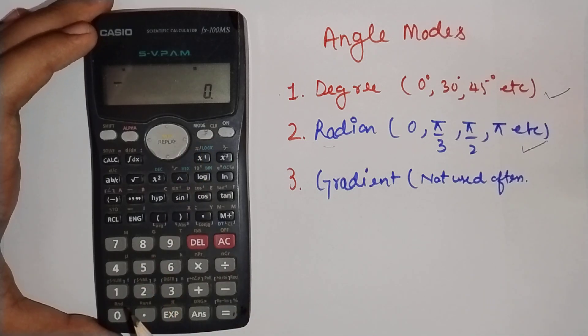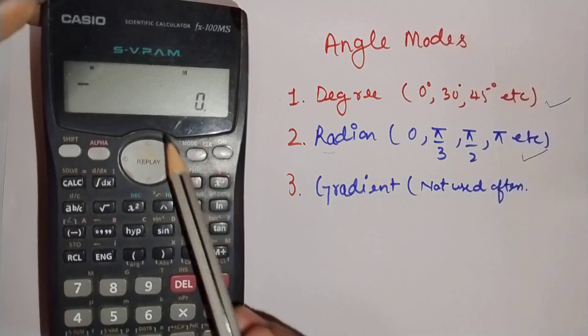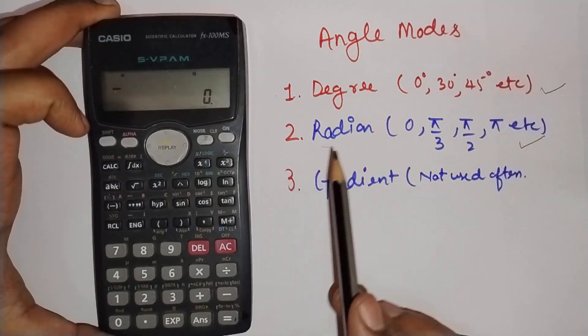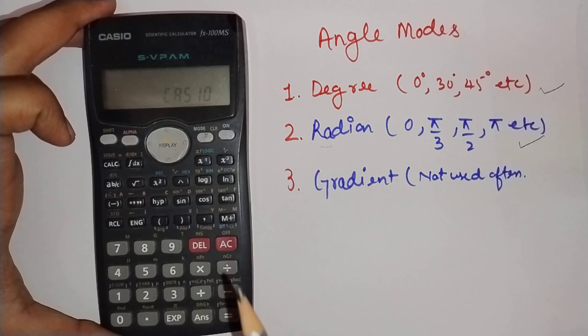Now you can see the 'G' on screen, which means gradient. That's how you change angle modes. Thank you very much.